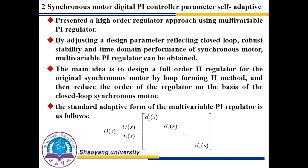In order to implement complex control in practical engineering, a high-order regulator operation using multivariable PI regulator is presented, adjusted to reflect closed-loop robust stability and time-domain performance of a circular motor multivariable PI regulator. The main idea is to design a high-order H-infinity regulator for the circular motor by loop-shaping H method, and then reduce the order of the regulator on the basis of the closed-loop circular motor. Based on the control structure shown above, the standard adaptive form of the multivariable PI regulator is followed.